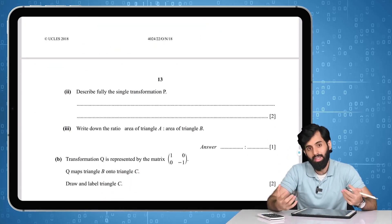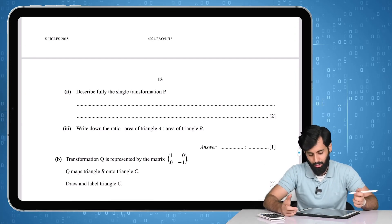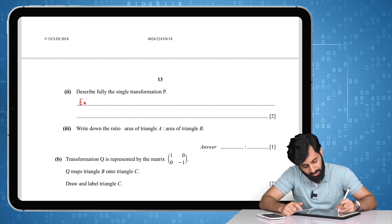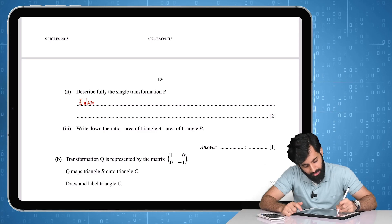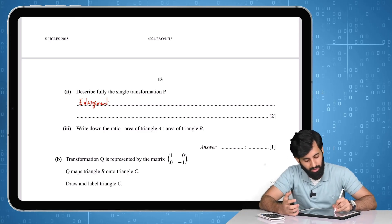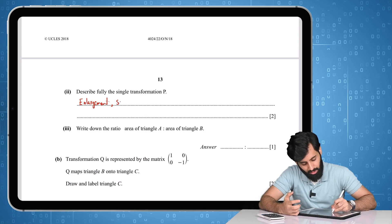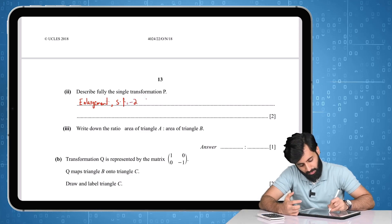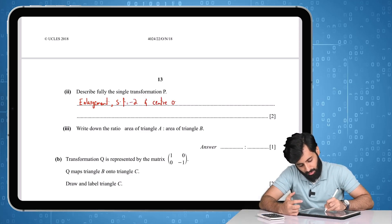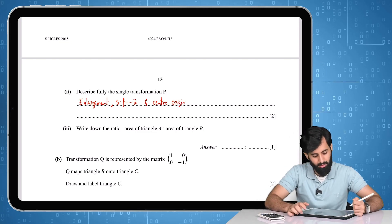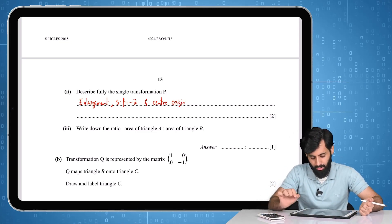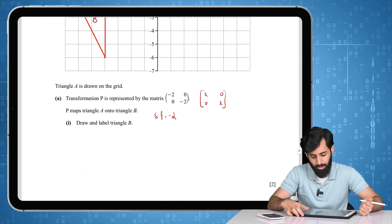The next part says describe fully the single transformation. We've already understood what this transformation is, so it shouldn't be too difficult. The transformation is enlargement — if you say enlargement, you need to state the scale factor and the center. So: scale factor -2, center origin.